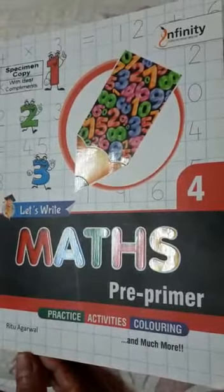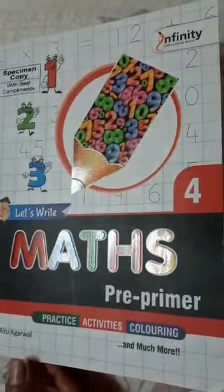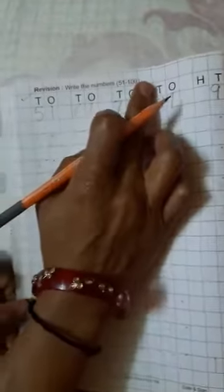Hello children, welcome to Bargobinam learning app. Today's work of maths in pre-primer book no. 4. Open the page no. 66. Let's be revised counting 51 to 100. Now start.